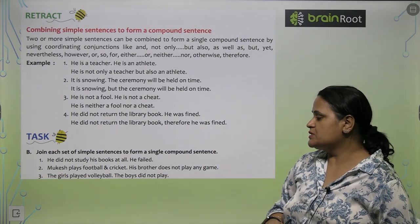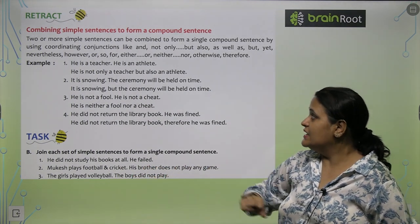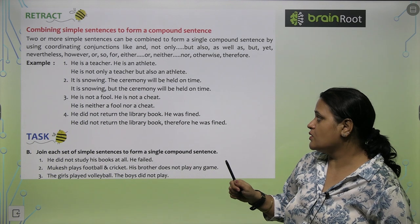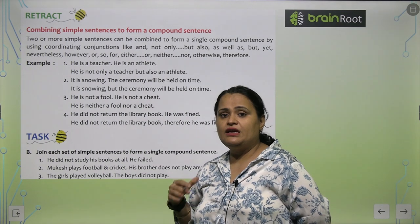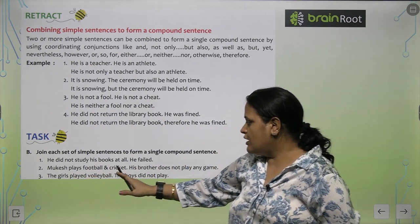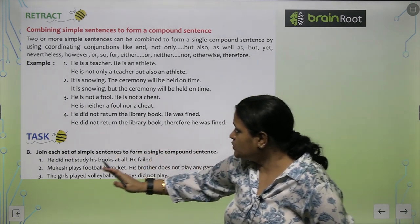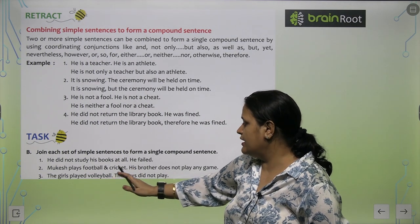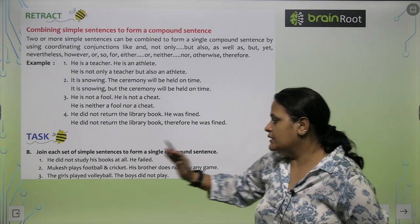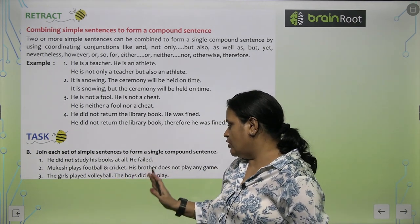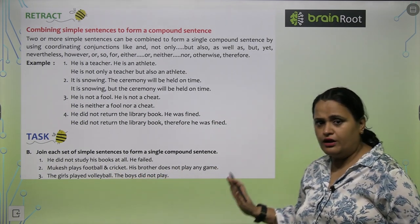Ab aapko isko single compound sentence mein banana hai. 'He did not study his books at all. He failed.' Combined: 'He did not study his books at all, so he failed.' 'Mukesh plays football and cricket. His brother does not play anywhere.' Combined: 'Mukesh plays football and cricket, but his brother does not play any game.' 'The girls played volleyball. The boys did not play.' Combined: 'The girls played volleyball but the boys did not play.'